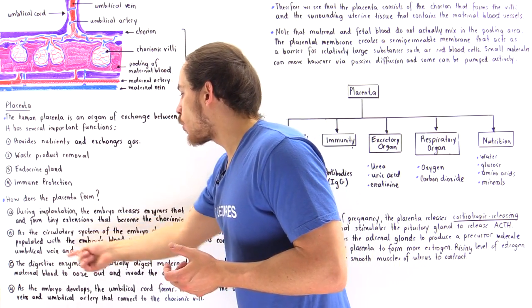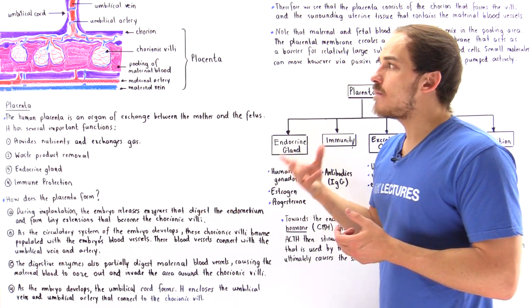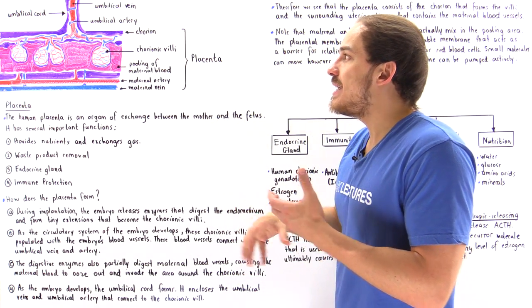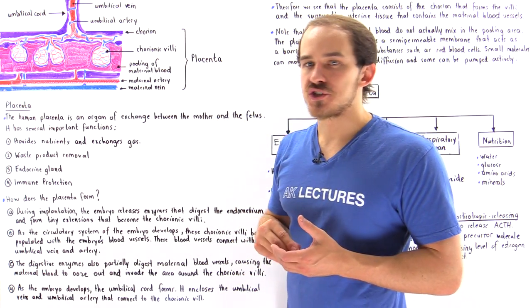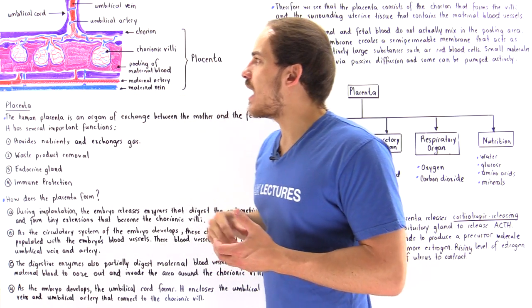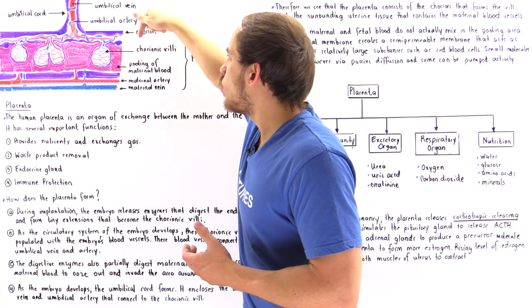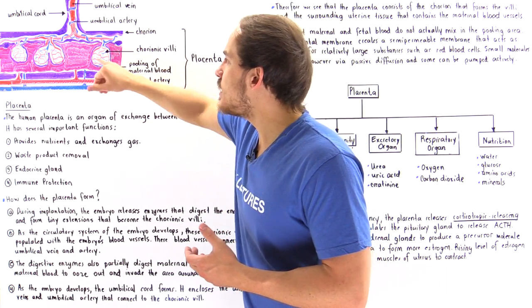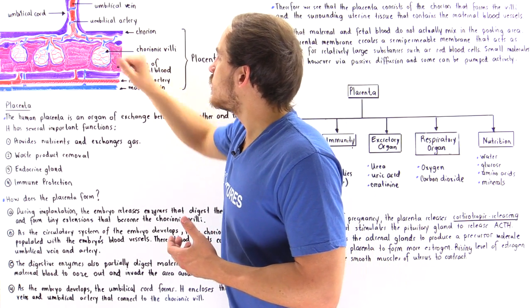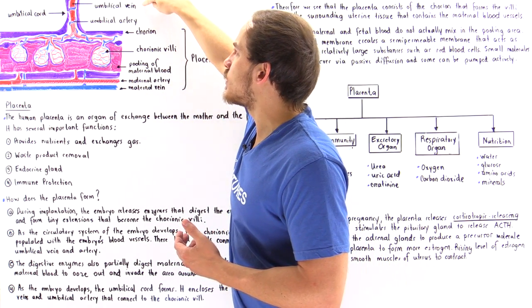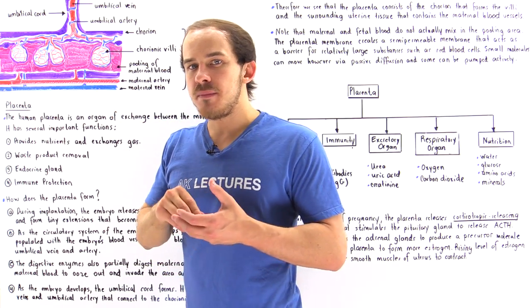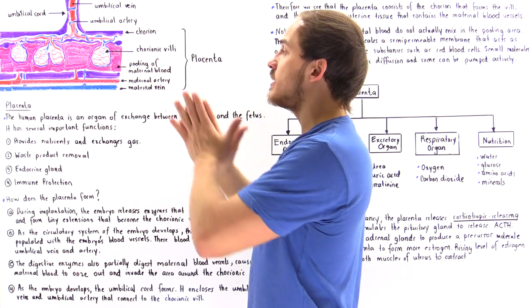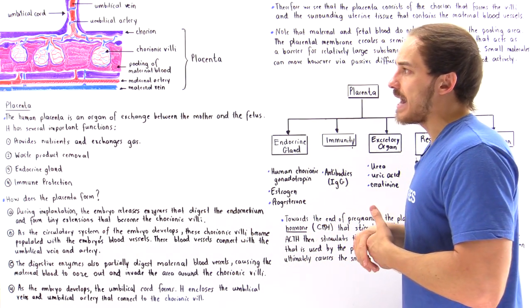As the cardiovascular system of that growing embryo develops, these chorionic extensions begin to become populated with blood vessels. Inside these chorionic villi, if we take a cross section, we'll see this population of blood vessels. These embryonic blood vessels eventually connect to the umbilical arteries and the umbilical veins found inside the umbilical cord, and those blood vessels eventually directly connect to the circulatory system of that fetus.